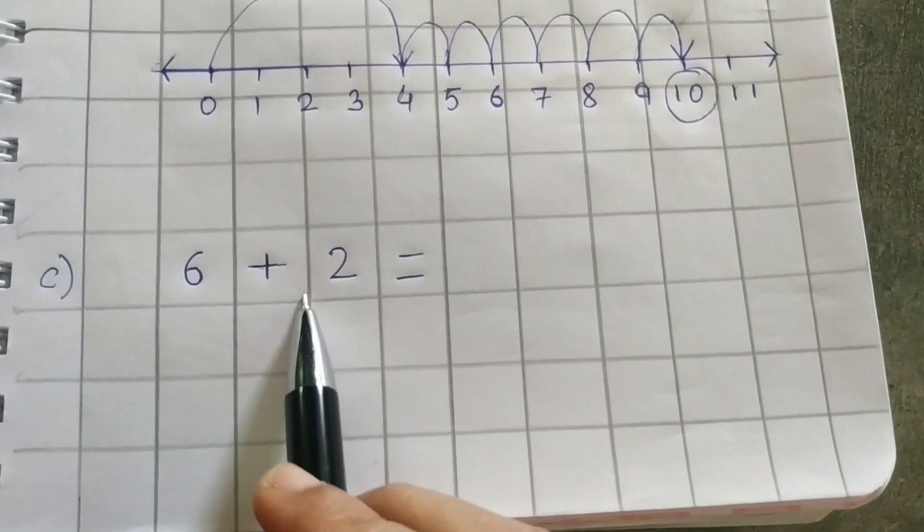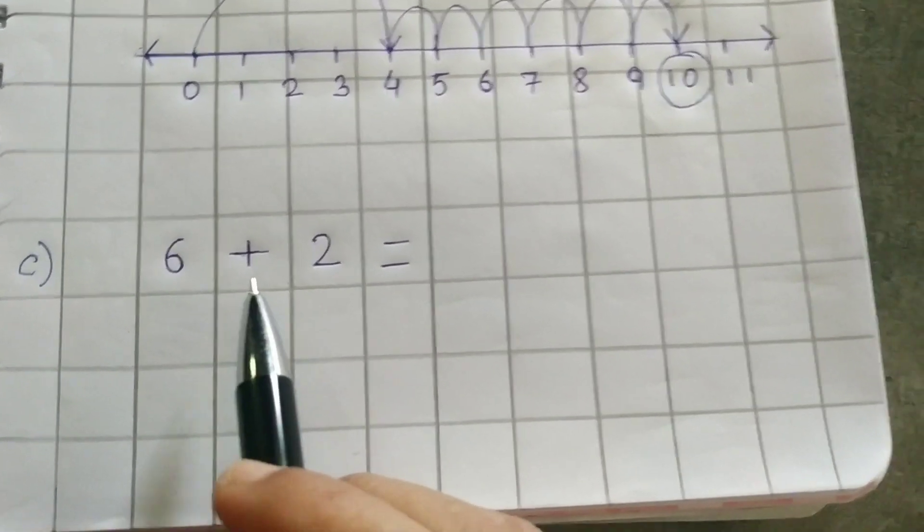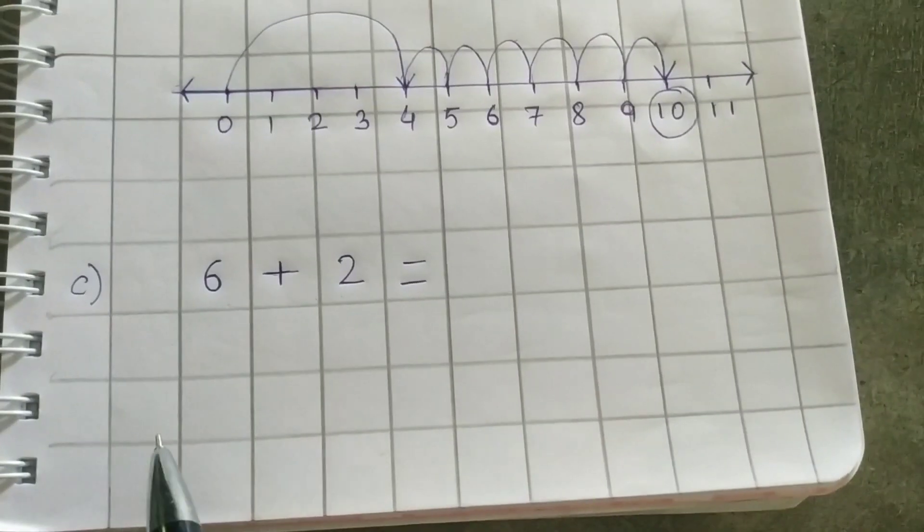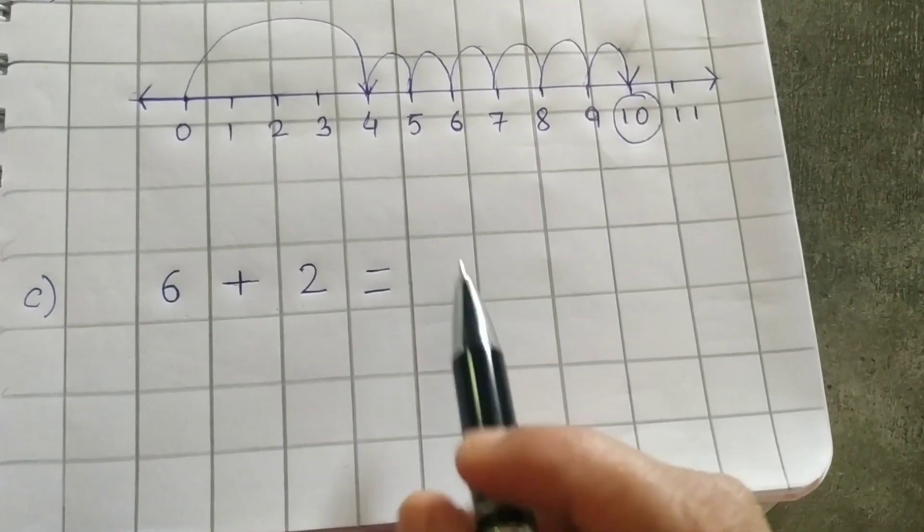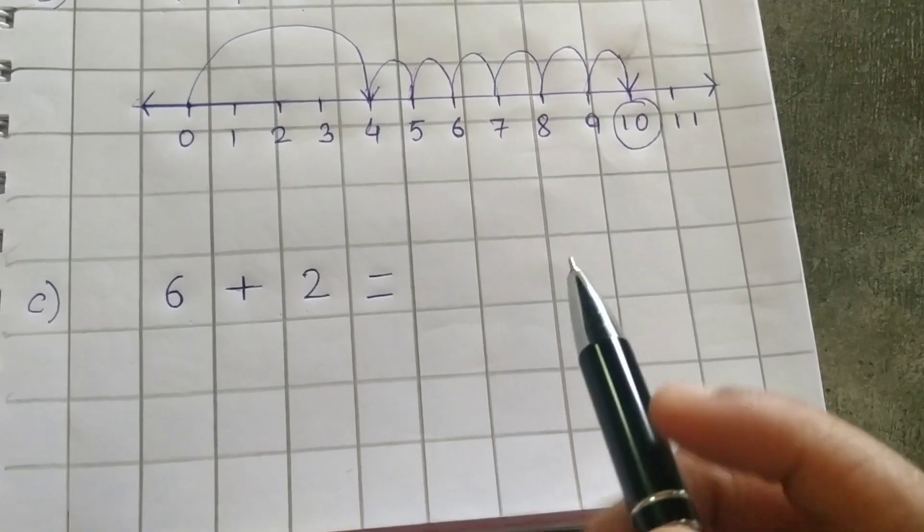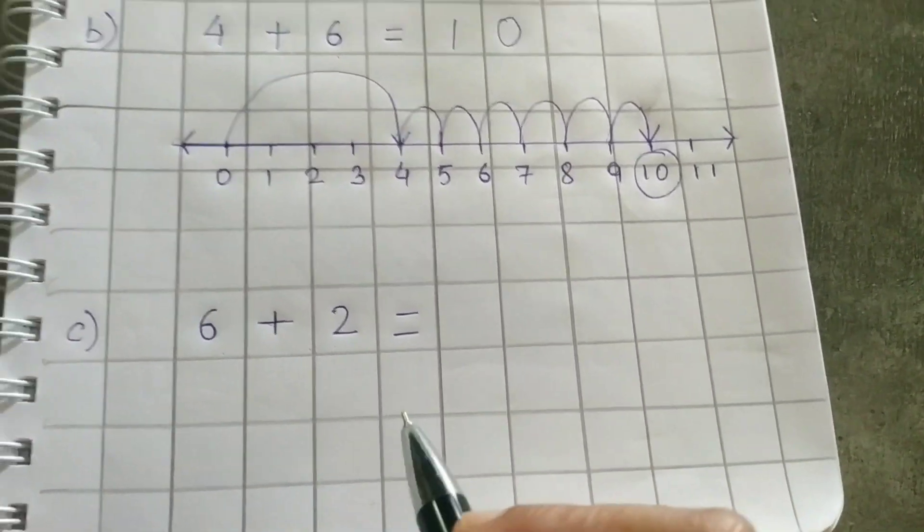Now this one. This is your homework. You will do it in your copy and tell me the answer. 6 plus 2. You have to draw the number line by yourself and write down the answer here and by using the arrow tell me what is the correct answer. This is your homework.